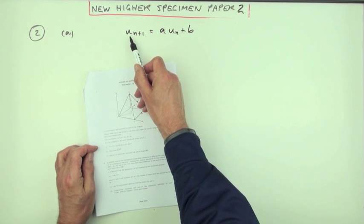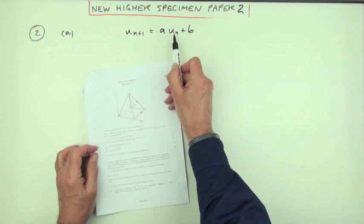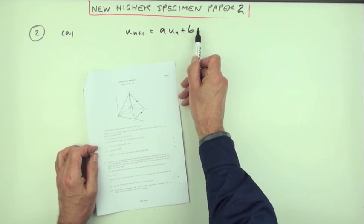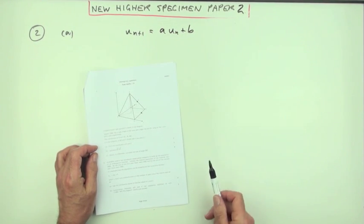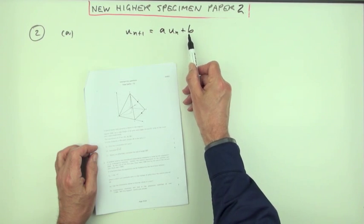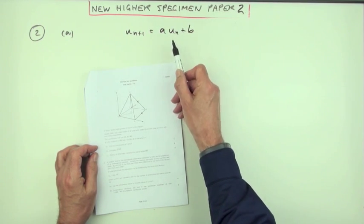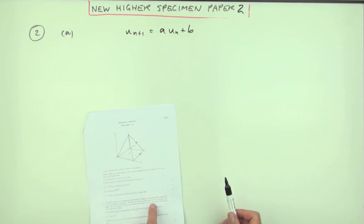The number in the following year will be some number times the population this year plus some number. However you don't know what A and B are but you do know the various U's. You know some populations.